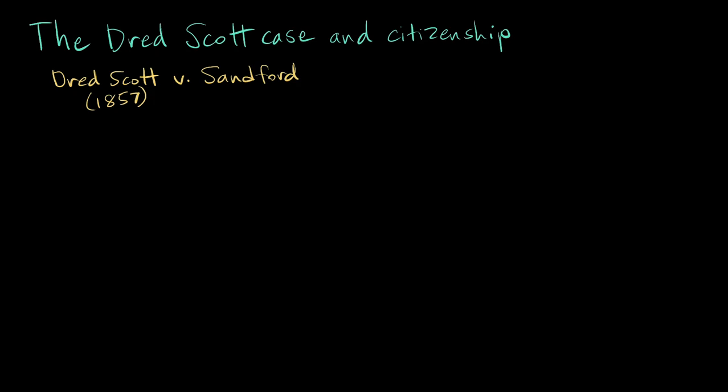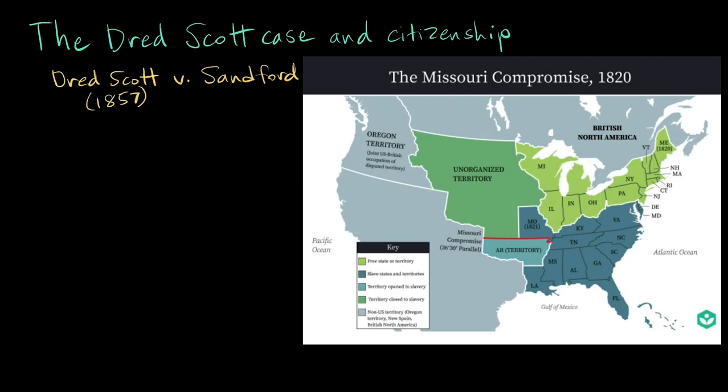Let me set the scene. In the mid-1800s, the U.S. government had been trying to balance the desires and political power of the slave-owning southern states and the free northern states for decades. They kept making compromises to keep the Union from falling apart, and one of these was the Missouri Compromise of 1820. The geography of this is important, so let's take a look at a map of North America at the time. Here you can see the free states and territories of the north in green and the slave-owning states and territories in blue.